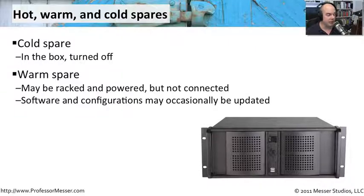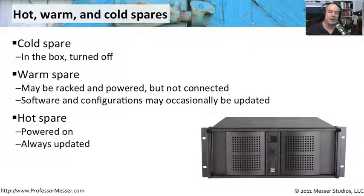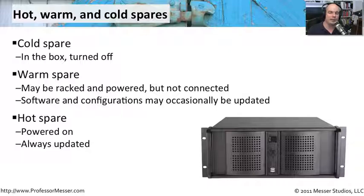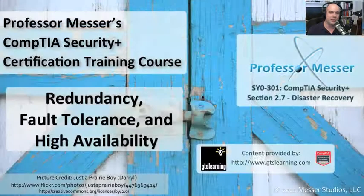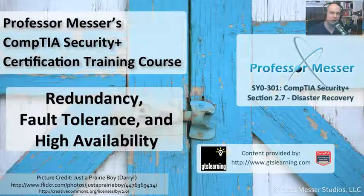Your last option is a hot spare — it's always on and always updated. In many cases, it's designed to automatically take over should there be a problem. If a system goes down, you can immediately move to the hot spare, which has an exact, up-to-date duplicate that everybody can use to perform the functions they need on your network.